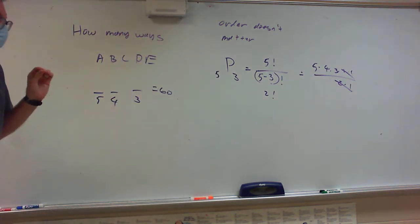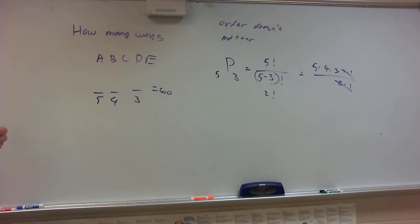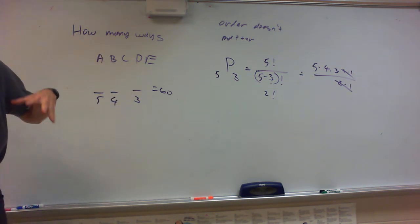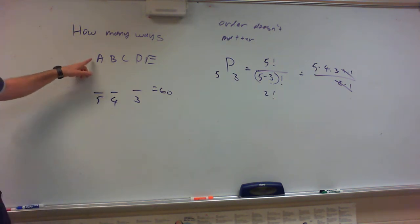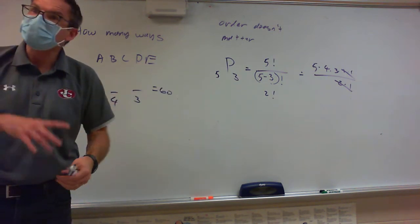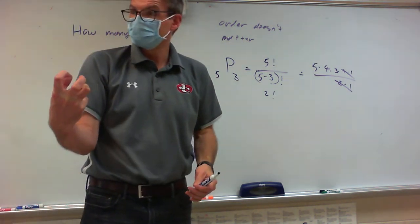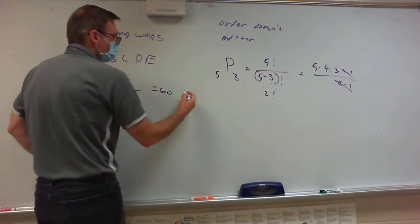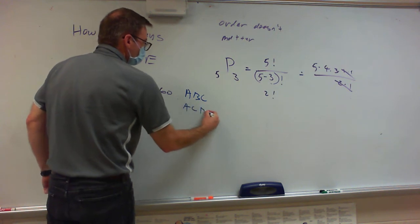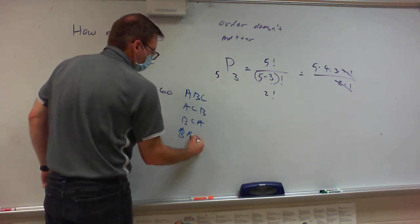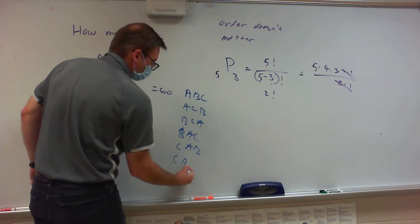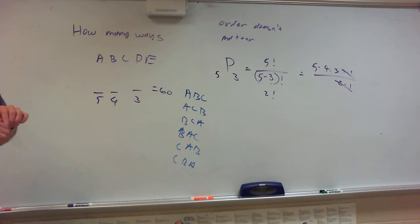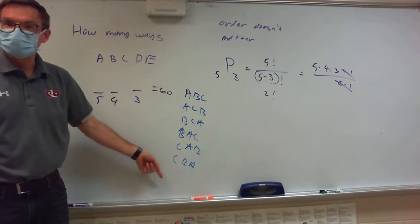Today we're going to talk about what it means when order doesn't matter. Instead of trying to put the ping pong balls in order, imagine you have a bag with five ping pong balls labeled A, B, C, D, E, and you want to pick out a group of three. It doesn't matter the order — pulling them out A, B, C or A, C, B or B, C, A or B, A, C or C, A, B or C, B, A — all of these are the exact same thing.